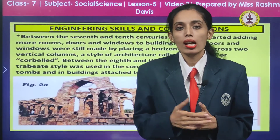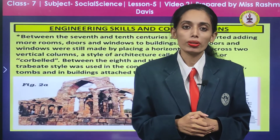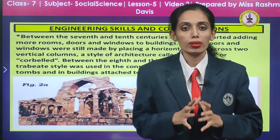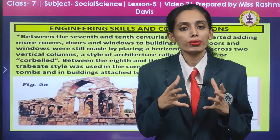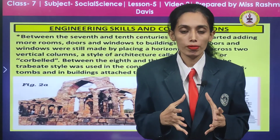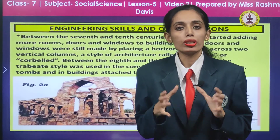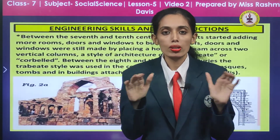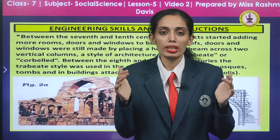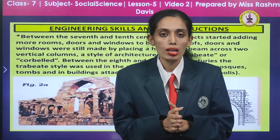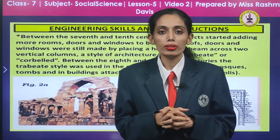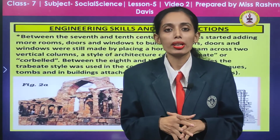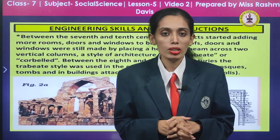In the previous video, we talked about the Kutub Minar, how the arcs are being formed on the two vertical linings. There is a horizontal column on top of which we have the arc. We also talked about the Bawri, the step well where the water is being stored.